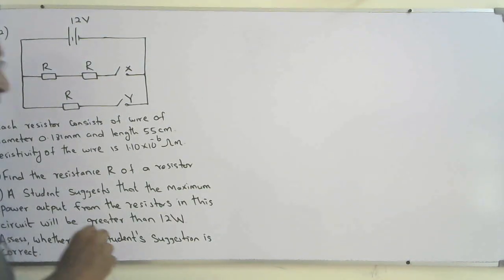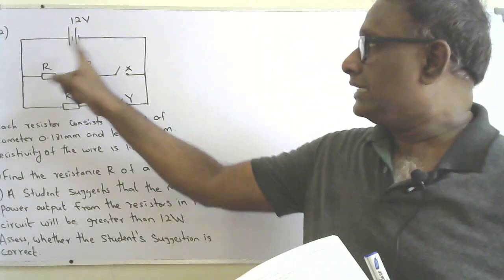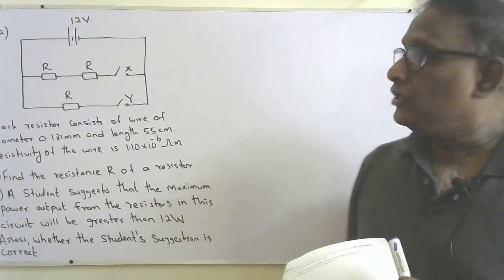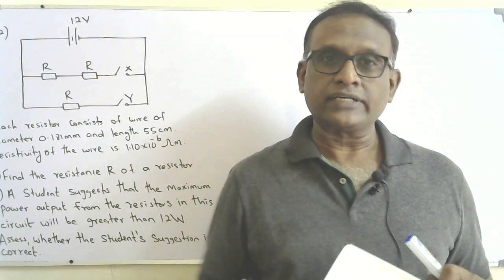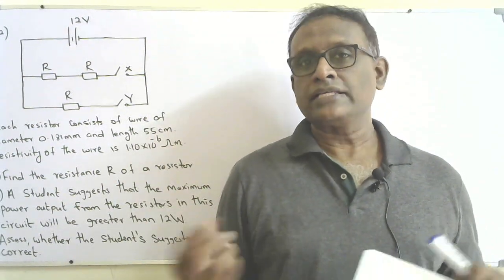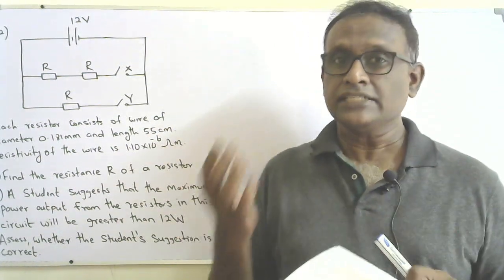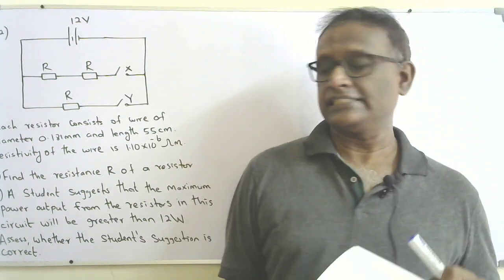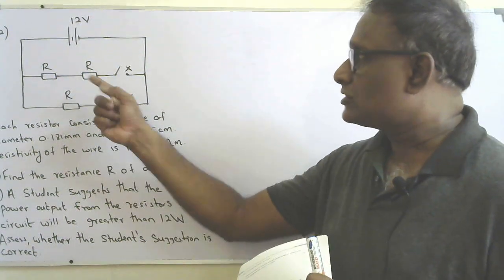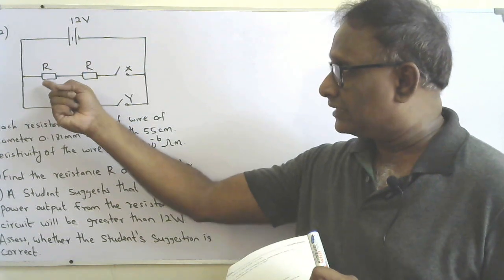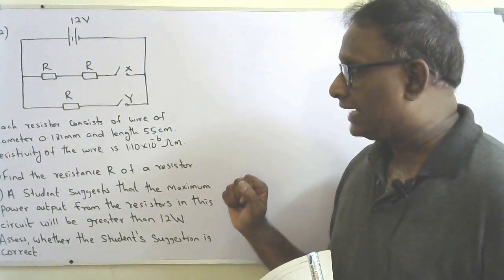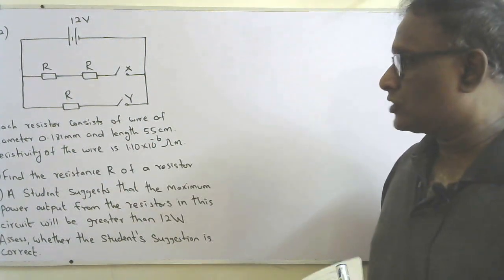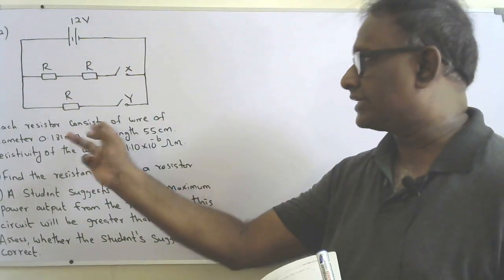This is the 12th question. Three identical resistors are connected as shown with two switches X and Y. These are color-coded standard resistors containing wire inside. Each resistor has wire of 55 centimetre length and diameter 0.181 millimetre. The first part: find the resistance R of one resistor.